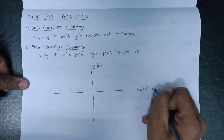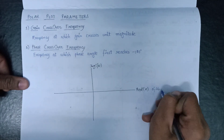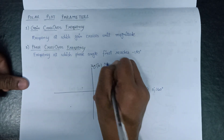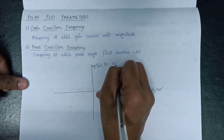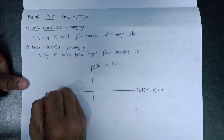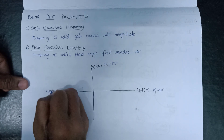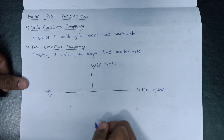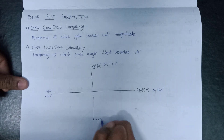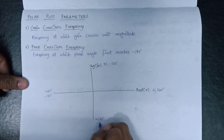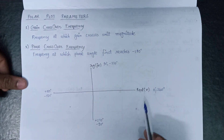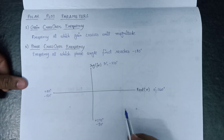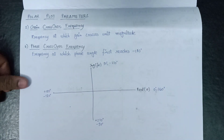This is zero degrees, or we can say 360 degrees. This is 90 degrees or minus 270 degrees. This is plus 180 degrees or minus 180 degrees. This can be termed as plus 270 degrees or minus 90 degrees. So we have placed all the positive as well as the negative angles onto all four quadrants.